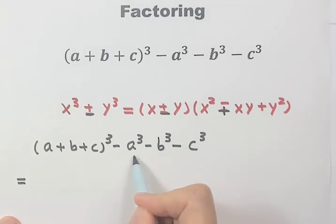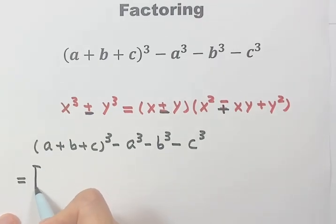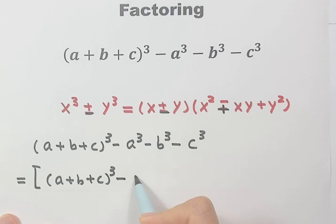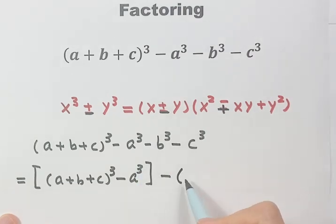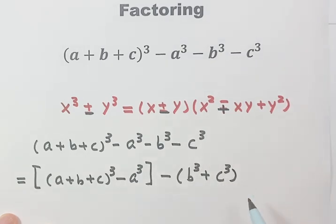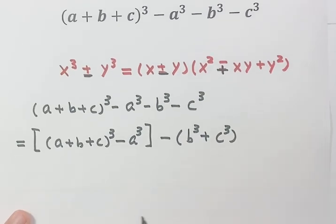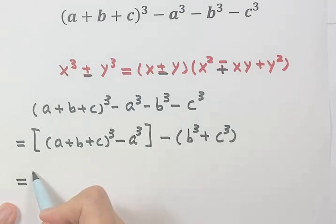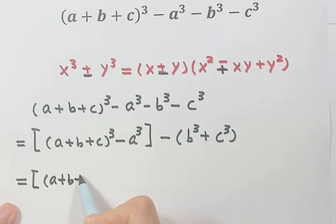First let's combine these two together — the first term minus the second term. So combine these two together and take out the negative sign.